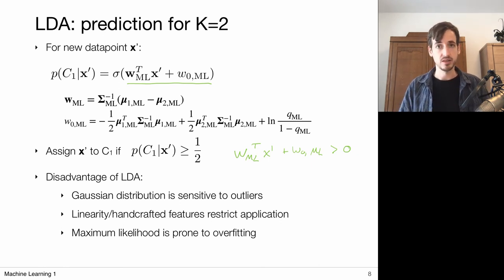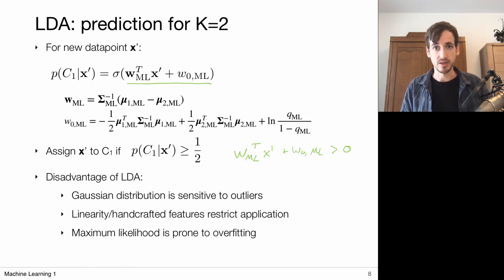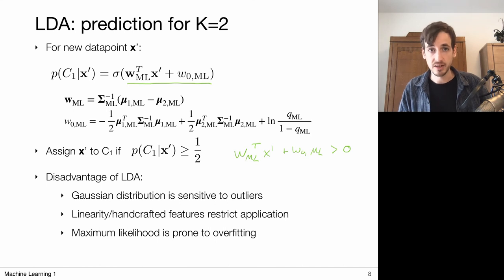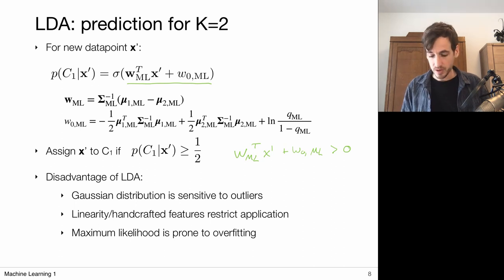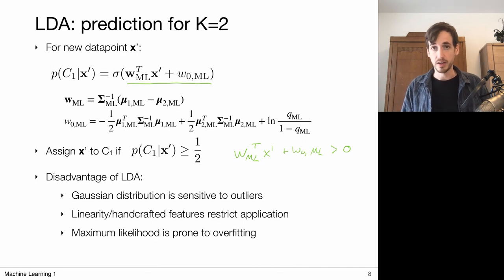Another disadvantage is that the framework heavily relies on handcrafted features, so in higher dimensional spaces we need to work with basis functions and make choices there, which complicates things. Finally, as in the linear regression case, the maximum likelihood solutions are quite prone to overfitting because we haven't considered any regularization terms.